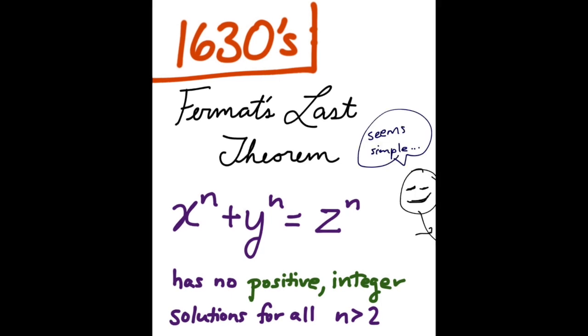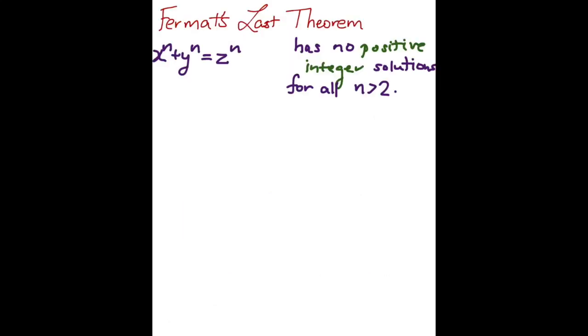Simple looking, right? Well, not exactly. At the time Germain began work, only cases n equals 3 and n equals 4 had been proven.